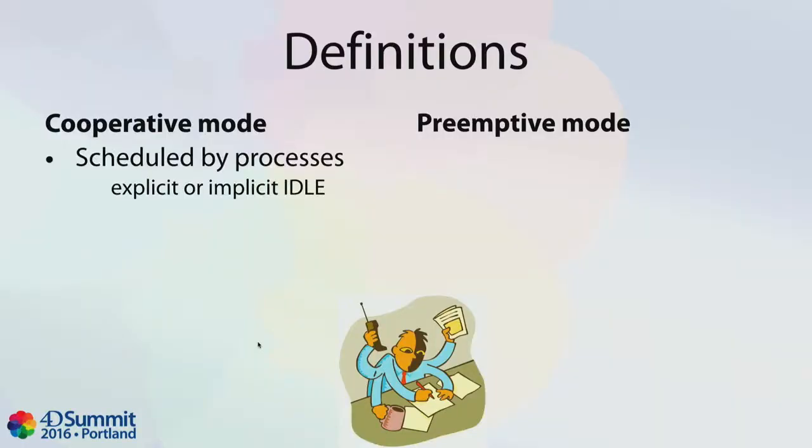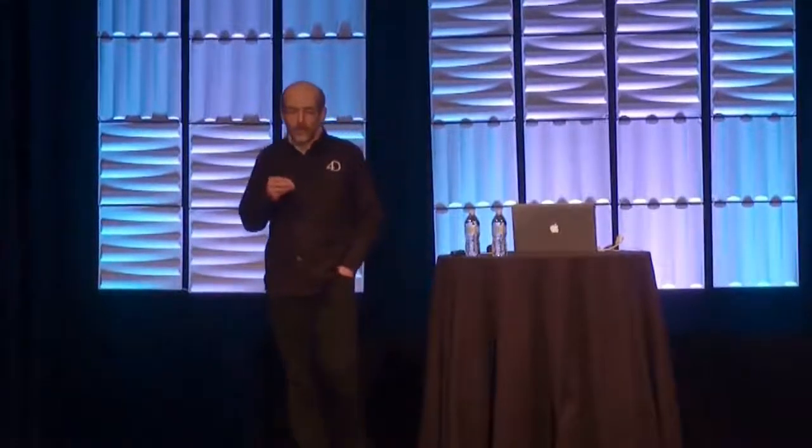So what is cooperative and what is preemptive? In cooperative mode, this is what you are using today with your 4D processes. Cooperative means that the 4D processes cooperate to share one CPU. One process must say it's stopping its execution and give the CPU to another process. They cooperate together — explicitly by using the idle command, which you must use in some cases in your compiled application, or implicitly by using most other 4D language commands that internally call the idle command to give the CPU to another process.